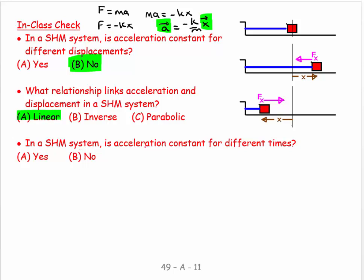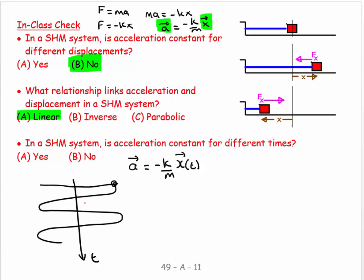And then the third question, in a simple harmonic system, is acceleration constant for different times? Oh, time is not in this equation. And that might flummox you to begin with. But if you think about it, a is equal to minus k over m times x. But x is a function of time. If we draw it out, what happens is, as time passes, this object oscillates backwards and forwards. So as time passes, this object is having different displacements. And because it has different displacements, it has different displacements at different times.